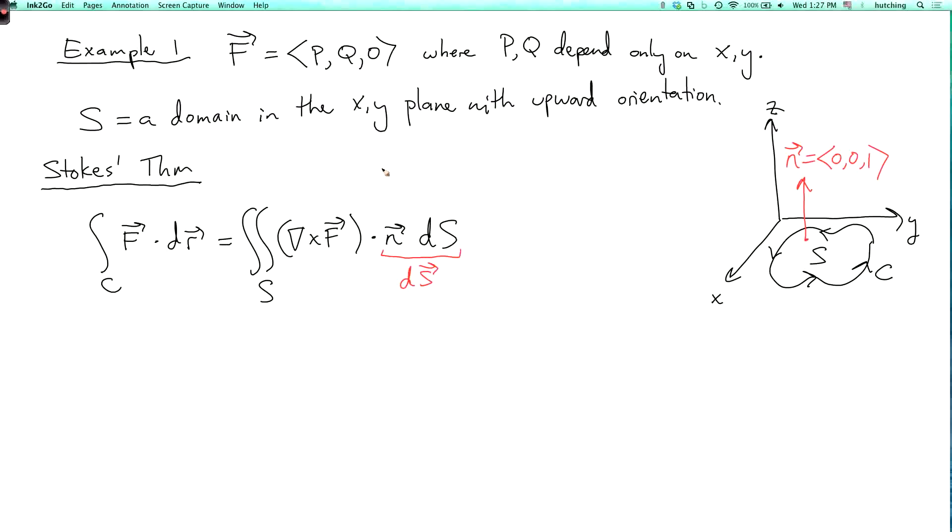Now what's the curl of f, so f is pqr, so the curl of f is d by dx, d by dy, d by dz cross p q 0, and since I'm dotting this with 0, 0, 1, I don't care about the x and y components of this.